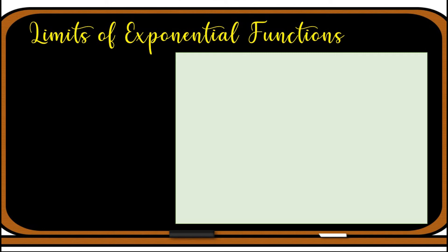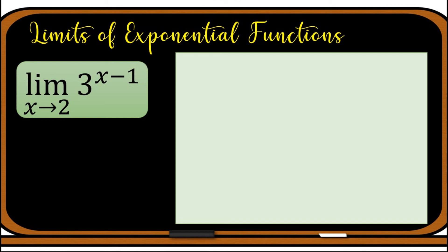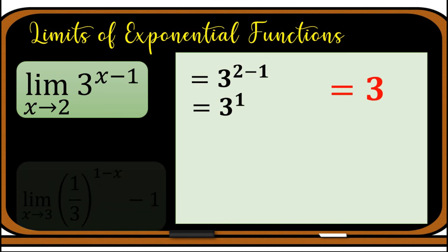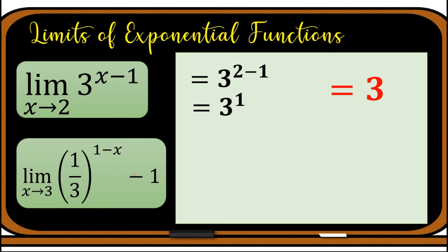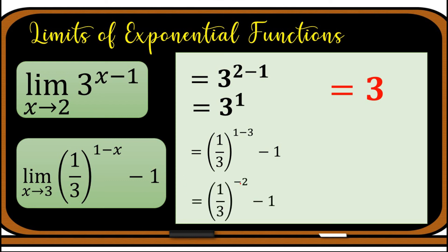Now let us have more examples applying direct substitution. First, find the limit of 3^(x−1) as x approaches 2. Since we are approaching a real number, we plug in 2: 3^(2−1) = 3^1 = 3, so the limit is 3. Next, the limit of (1/3)^(1−x) − 1 as x approaches 3: plug in 3 to get (1/3)^(1−3) − 1 = (1/3)^(−2) − 1 = 3^2 − 1 = 9 − 1 = 8, so the limit is 8.